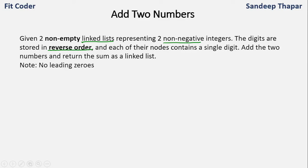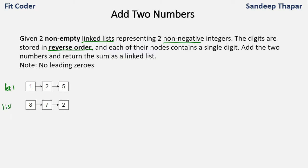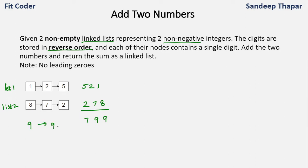Let's take an example. So let's say these are the two linked lists that we are given — list 1 and list 2. Since the digits are stored in reverse order, this number is 521 and this number is 278. If we add these two numbers we get 799, so the output should be 9 9 7.